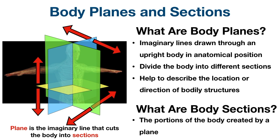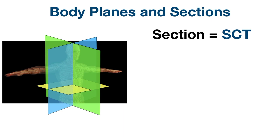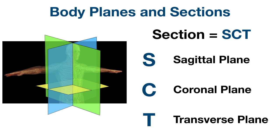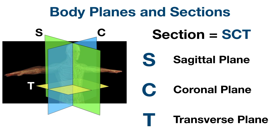Let's go through the major body planes. There are three main body planes and a couple of minor ones we'll talk about at the end. A simple trick to remember the three main body planes is to abbreviate the word 'section' as SCT — this helps you remember sagittal, coronal, and transverse. The sagittal plane is the green cut labeled S, the coronal plane is the blue cut labeled C, and the transverse plane is the yellow cut labeled T.